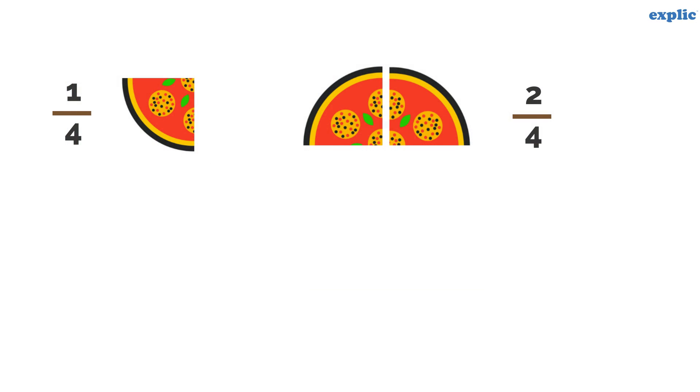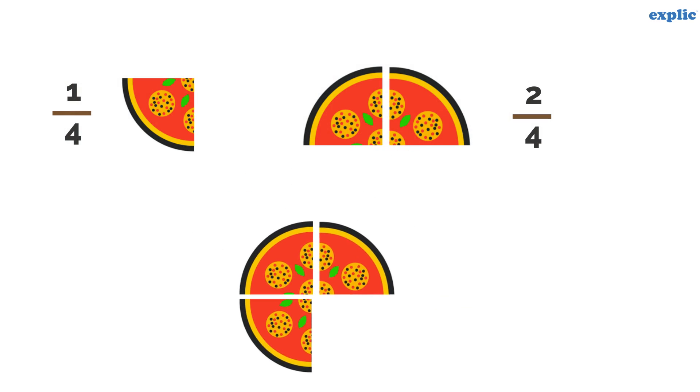What will happen if you add 1 by 4 pizza and 2 by 4 pizza? You will have 3 by 4 pizzas. Did you notice that the numerator of the result is just the addition of 2 numerators?